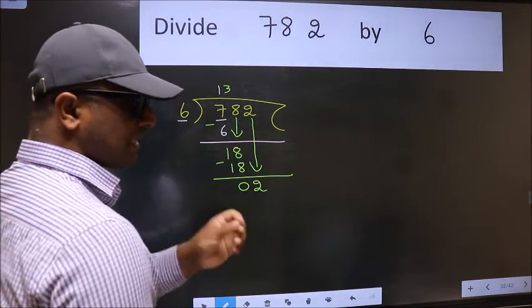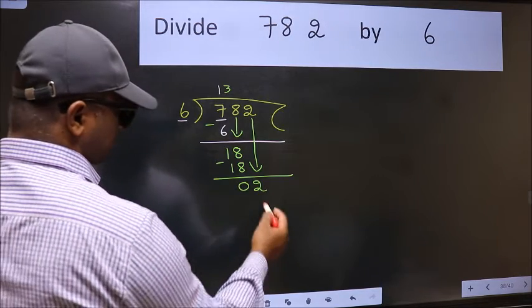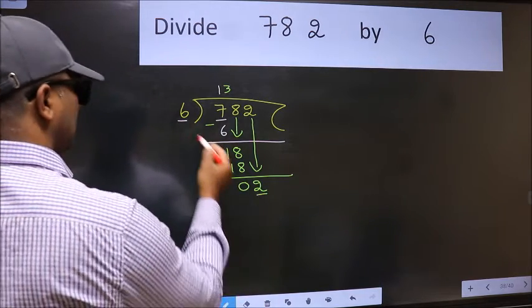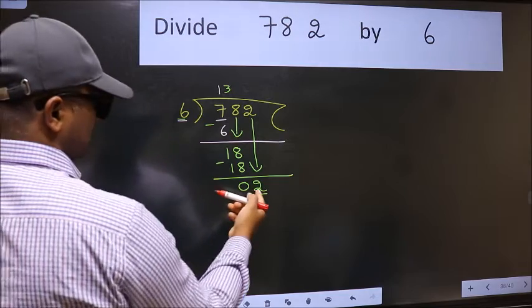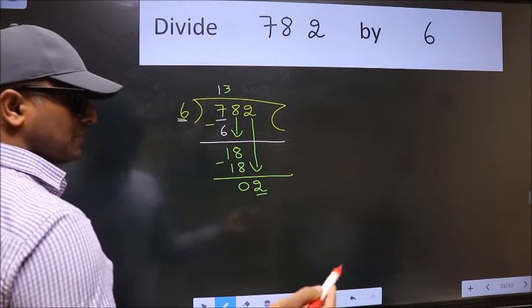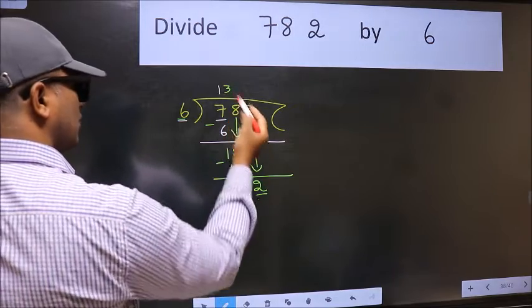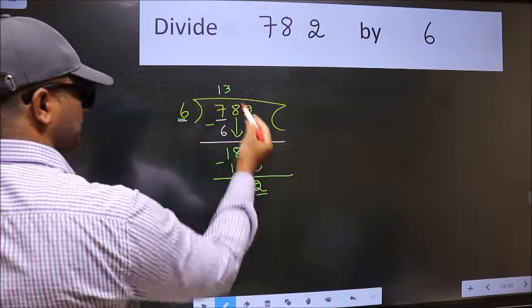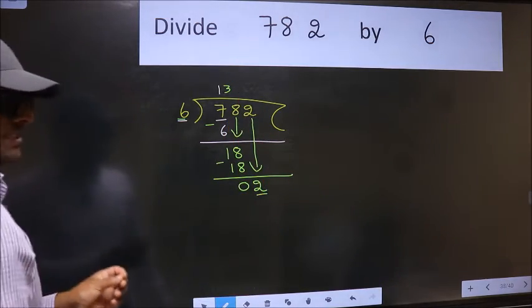After this step, the mistake happens. And the mistake is this. Here we have 2, and here 6. 2 is smaller than 6. So what many do is, they directly put dot take 0. Which is wrong.